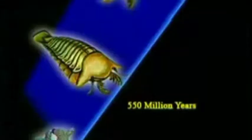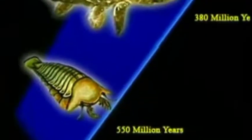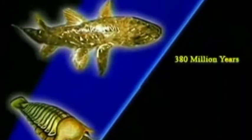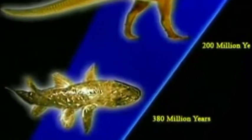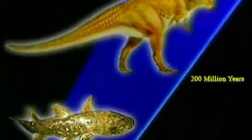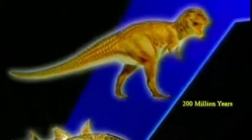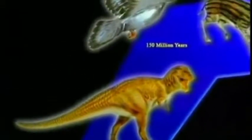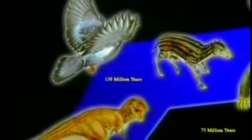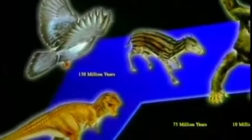It was Darwin who originally named these hypothetical imaginary creatures intermediate forms. He knew that if his theory was to be verified, then the remains of these intermediate forms would have to be unearthed in the fossil record.